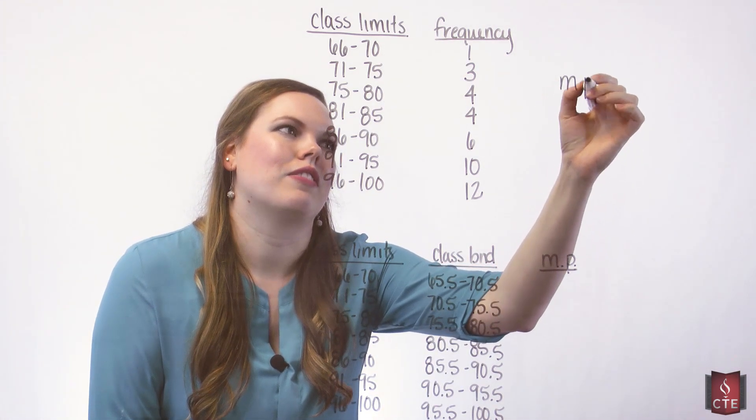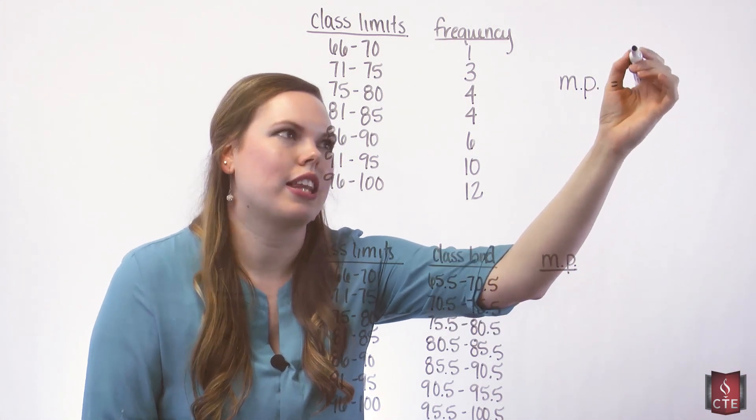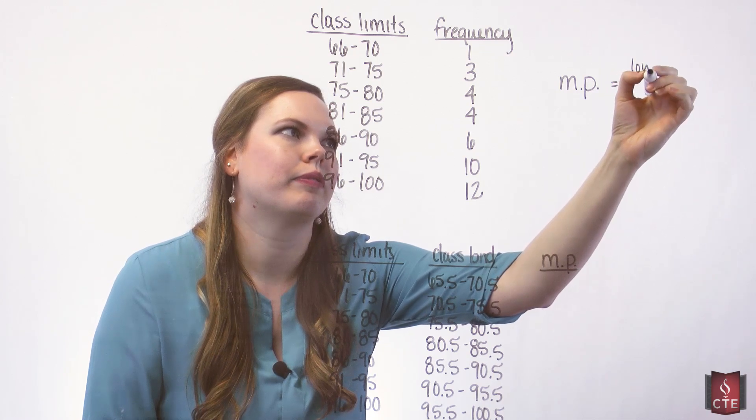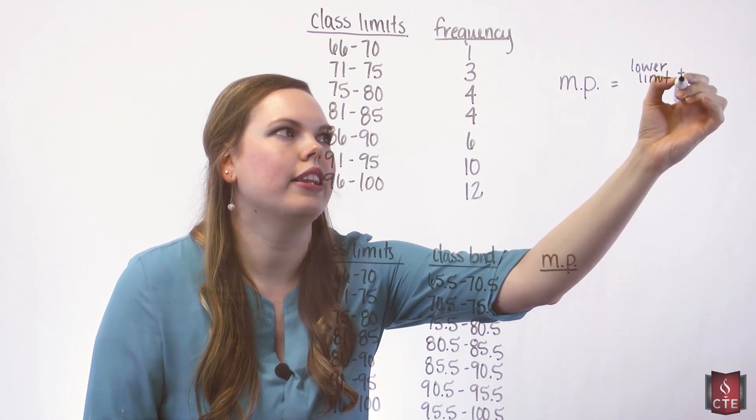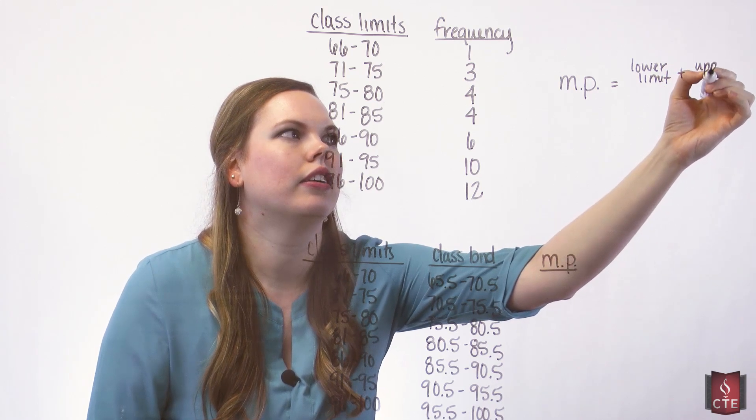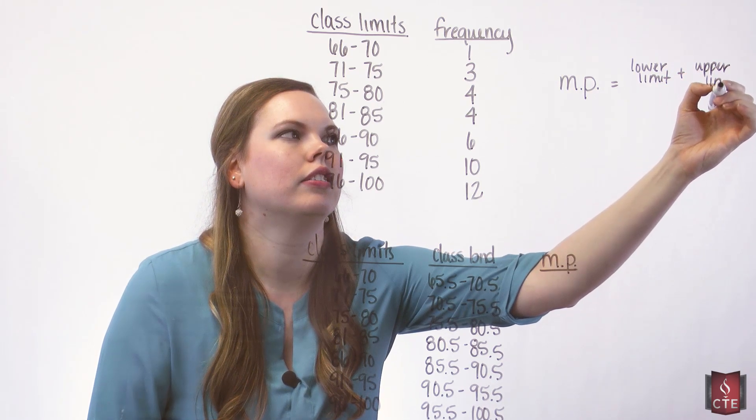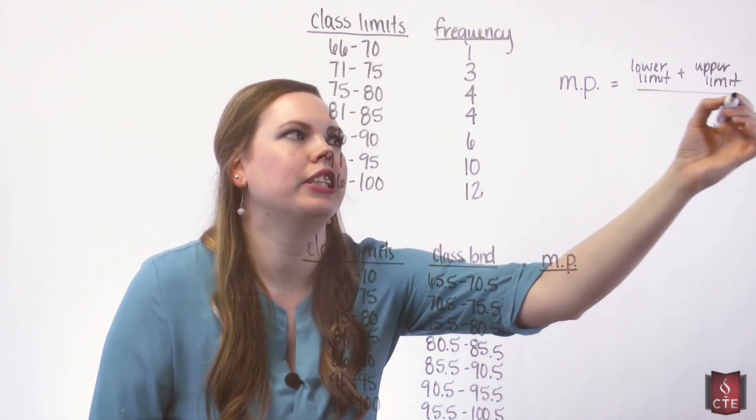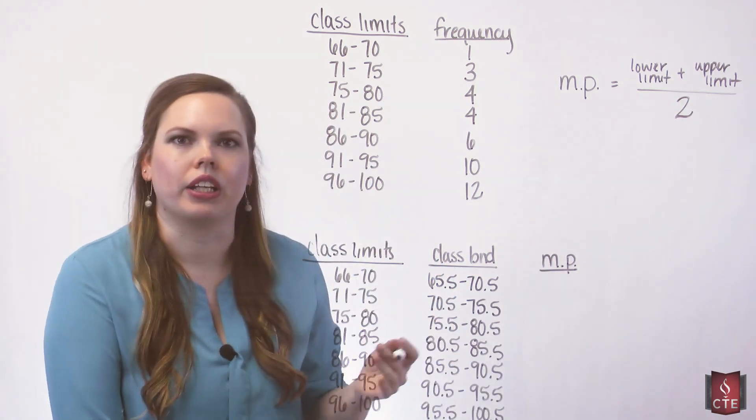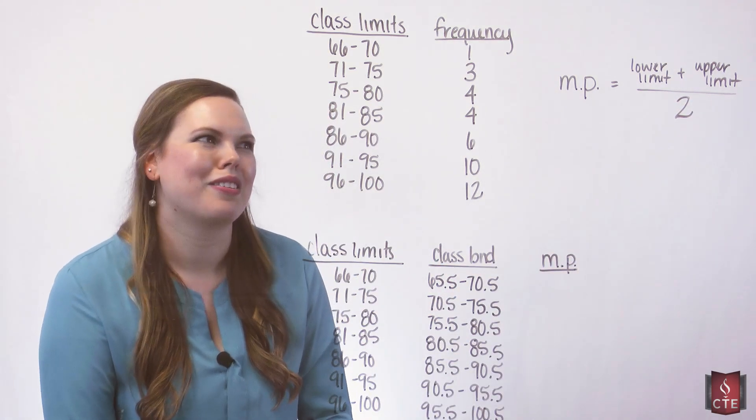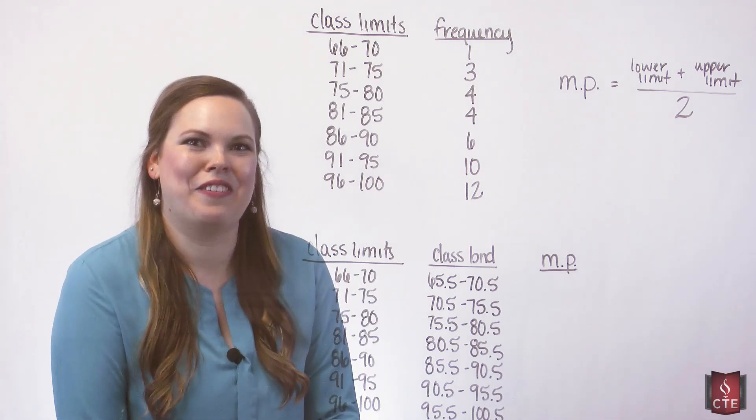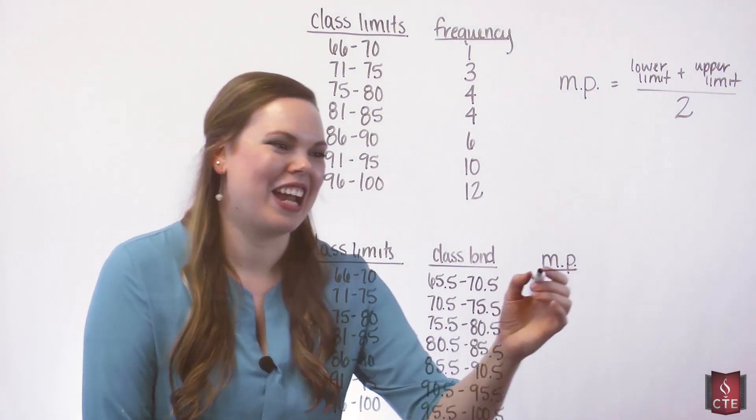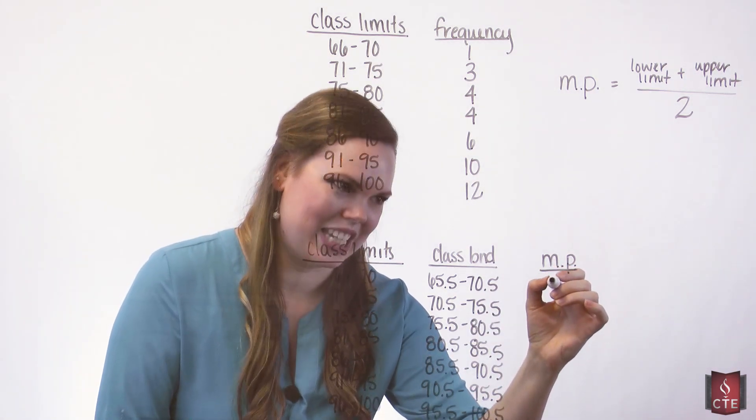And to get that midpoint, I'll put the formula just right here so you can refer to it. To get a midpoint, you take the lower class limit, you add the upper limit, and you divide by 2, just like a regular midpoint. You do it just like that. So take the lower limit of 66, add 70, and divide that value by 2, and you get your midpoint here of 68.